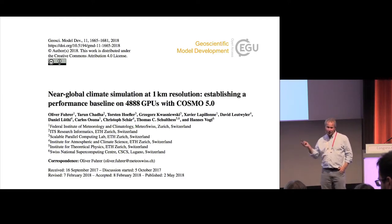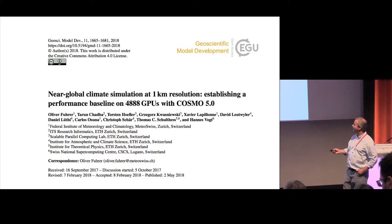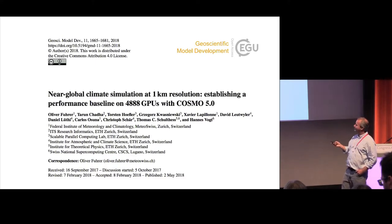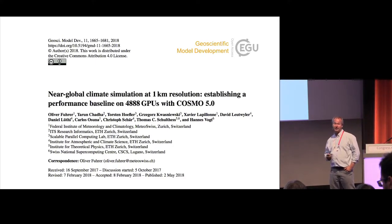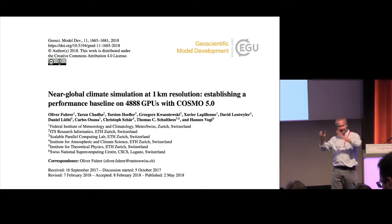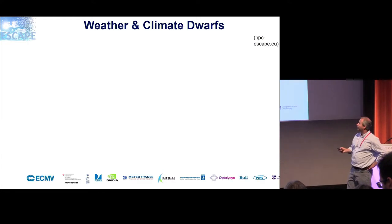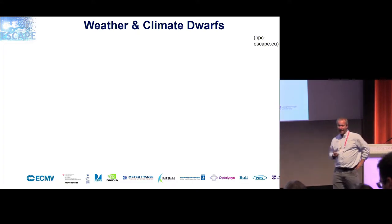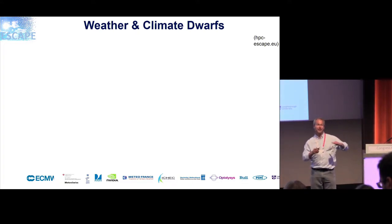On the computational side, Oliver Fuhrer and colleagues produced a near-global climate simulation at one kilometre resolution, establishing a performance baseline on 4,818 GPUs with COSMO. This addresses two aspects: moving to the intermediate goal of one kilometre resolution, and using GPUs — adapting to future architectures. This sets a baseline of where we want to be with our simulations as well.